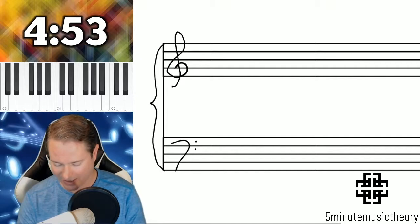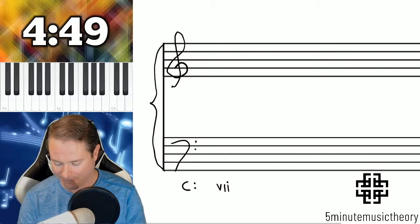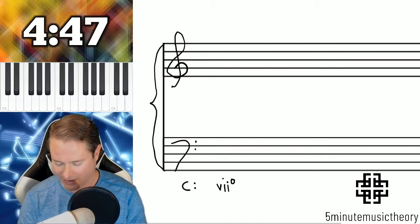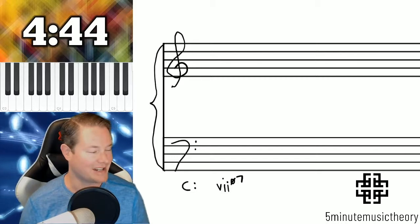And we're going to start by working in a major key. Let's just go ahead and do C major just to keep things nice and easy. The leading tone seventh in a major key has the quality of a half diminished seventh chord.